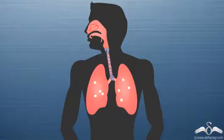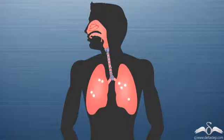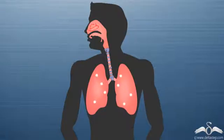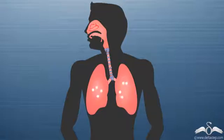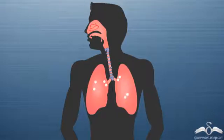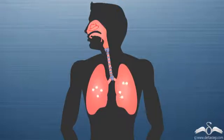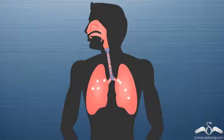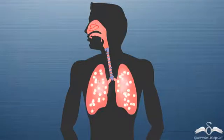Thus the number of air molecules per unit area reduces. Fewer air molecules are now hitting the wall of the lungs per unit area, so lesser force is exerted. Lesser force per unit area means lesser pressure. So the pressure of the air present in the lungs becomes reduced compared to the outside pressure.